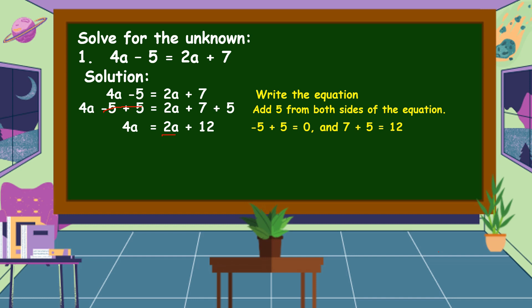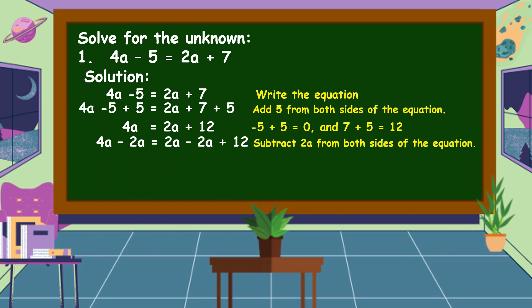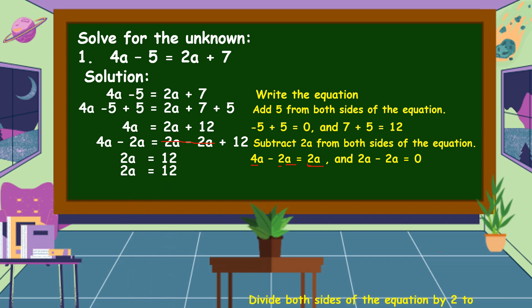Next, we eliminate 2A from the right side by subtracting 2A from both sides of the equation. 4A minus 2A equals 2A, because 4 minus 2 equals 2, and we keep the literal coefficient A. On the right side, 2A minus 2A cancels to 0, leaving 12.